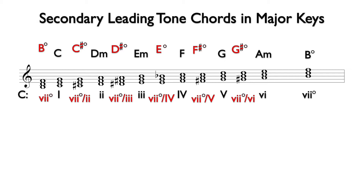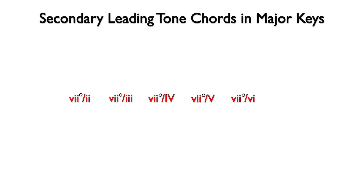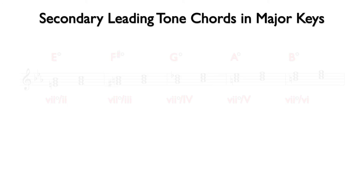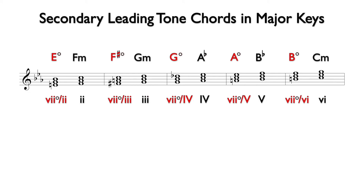Since seven diminished is a diminished triad, it will not feel like one in a major or minor key. Therefore, there is no seven diminished of seven diminished. These Roman numerals will transfer to any major key. A secondary leading tone chord is always found a minor second below its chord of resolution. Here are the secondary leading tone chords and their chords of resolution in the key of A, and here are the secondary leading tone chords and their chords of resolution in the key of E flat.